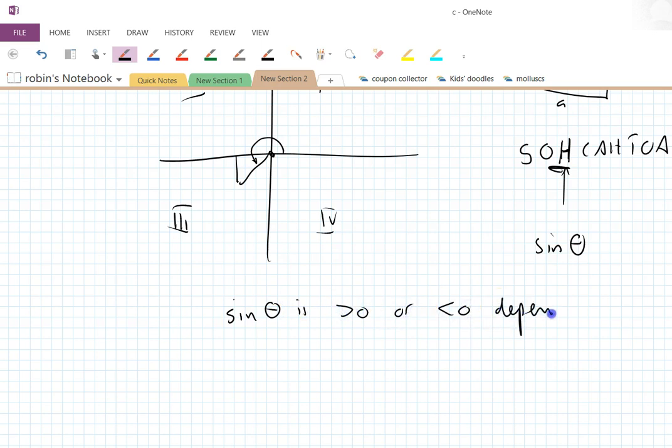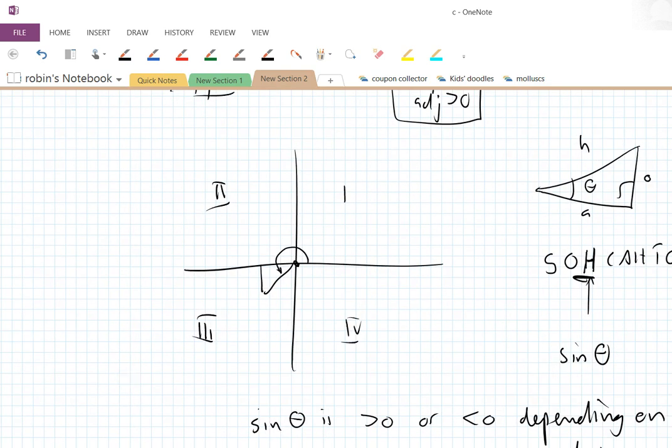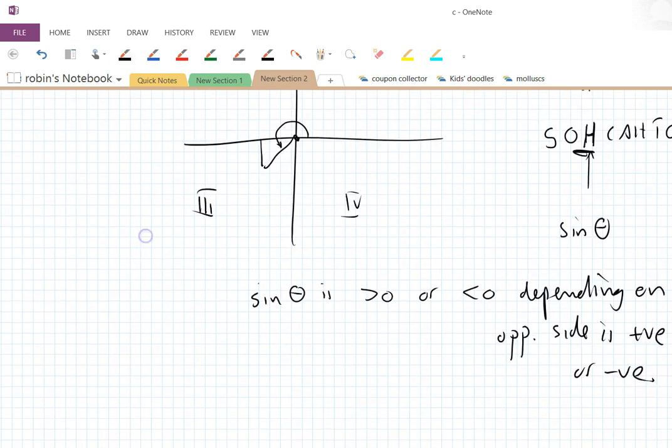Depending on what? It depends on whether the opposite side is positive or negative. So for quadrants three and four, we know that sine theta is negative. Well, let's just have a table of this.